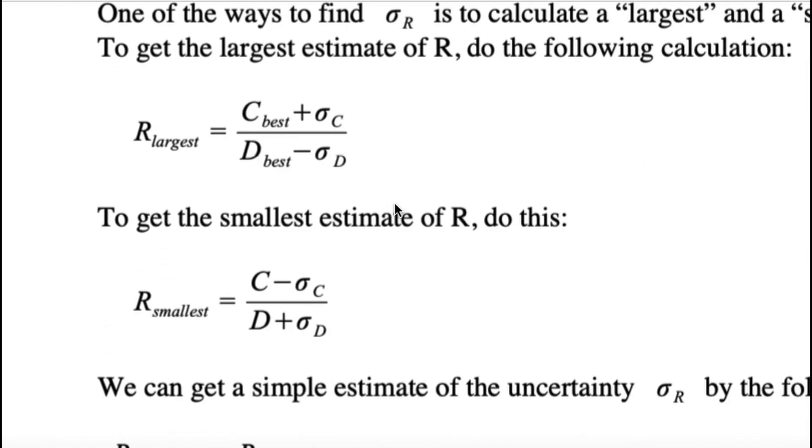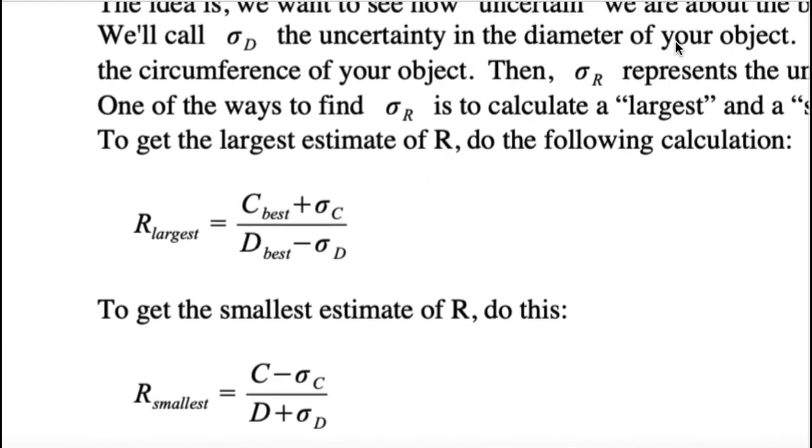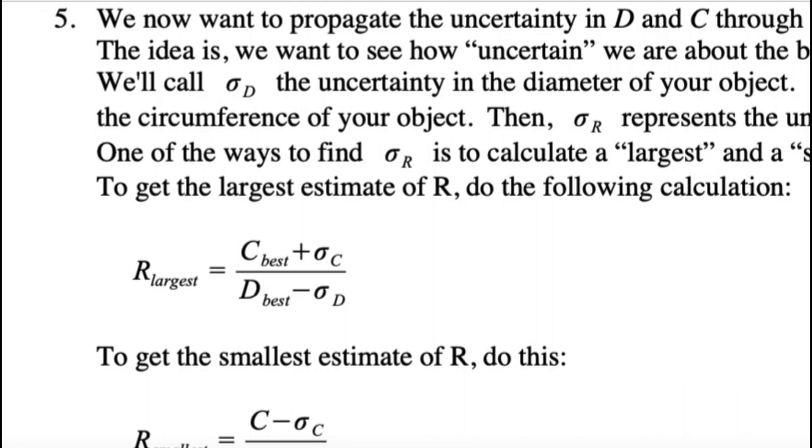Now, it's going to ask you now to do what's called propagating the uncertainty. This is a good skill to have for any lab where you make some measurements, you're not sure exactly what the circumference is, you're not sure exactly what the diameter is, and you want to do a calculation, and you want to say how off your calculation using those measurements might be. So, what we're going to do is we're going to try to think of the best and worst case scenarios.